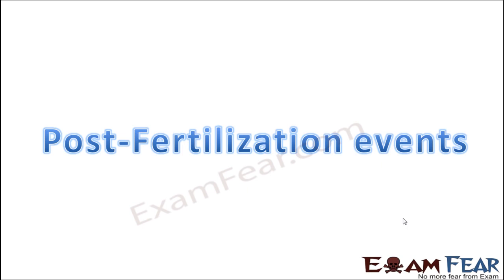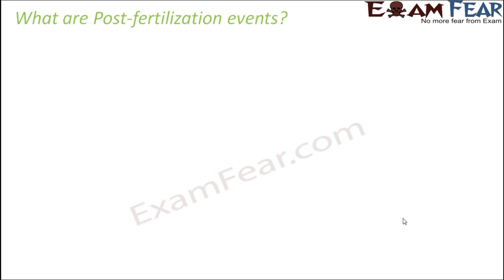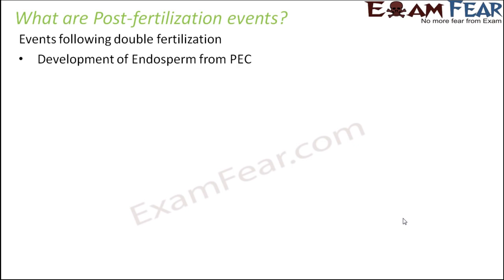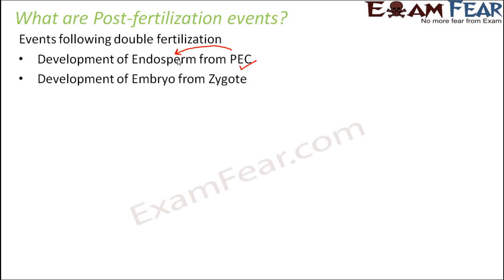So what is the result of fusion? Zygote is formed and primary endosperm cell, that is PEC, is formed. Now we want to understand what happens to the zygote and the PEC. So that is what we will discuss in post fertilization events. These are the events which follow the double fertilization process. Here we will see how the endosperm is developed from the PEC, and we will also see how the zygote develops into embryo.